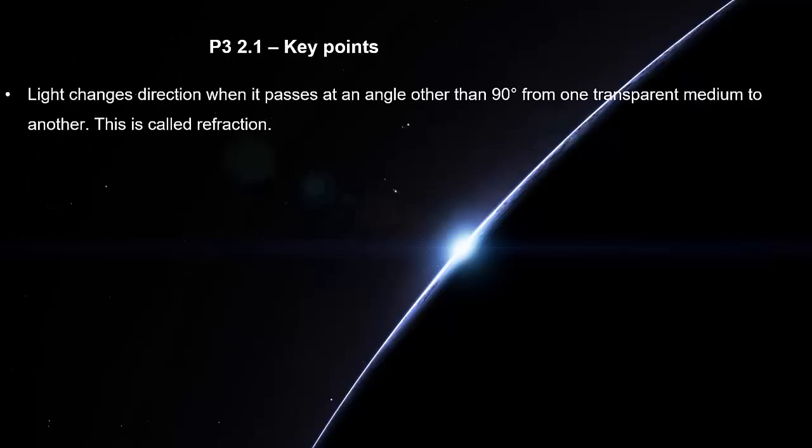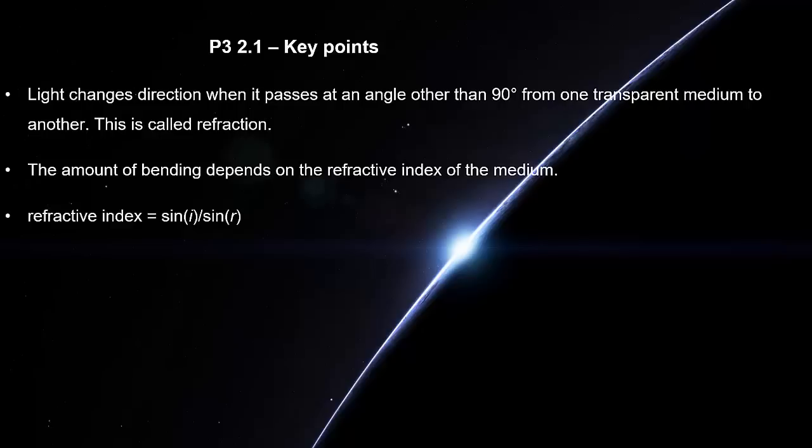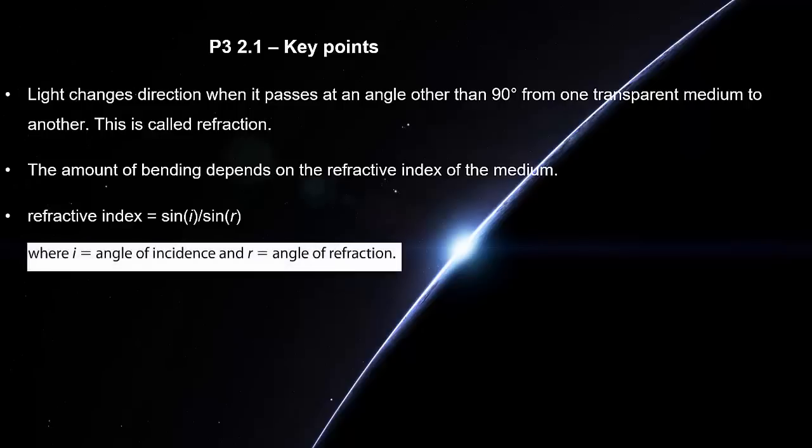Light changes direction when it passes at an angle other than 90 degrees from one transparent medium to another. This is called refraction. The amount of bending depends on the refractive index of the medium. Refractive index equals sin I over sin R. I equals angle of incidence, R equals angle of refraction.